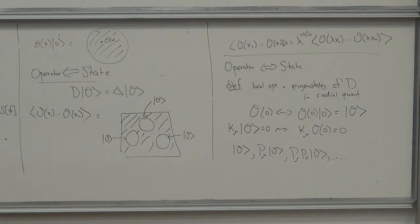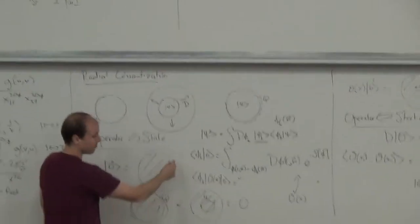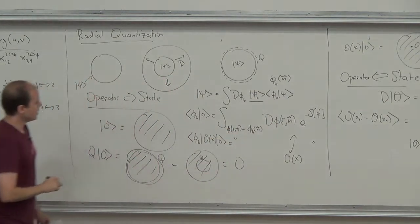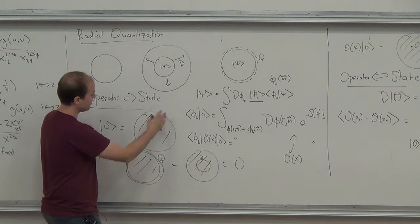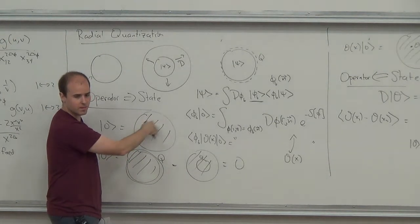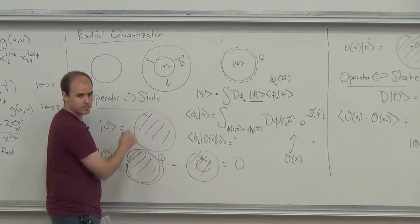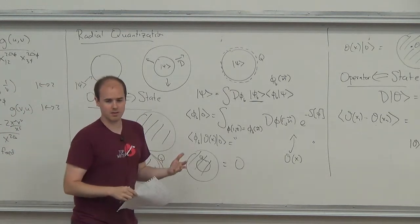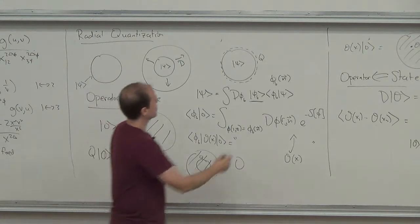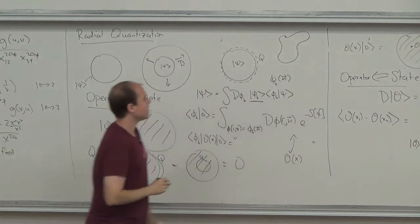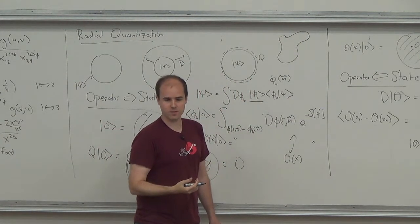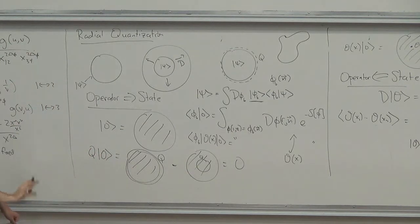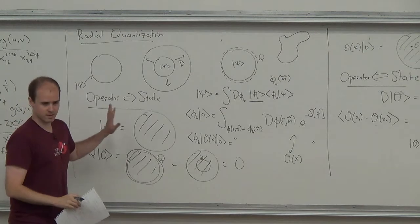Question about notation: when I draw a circle filled in, I mean doing the path integral over the fields in that region — this is different from the pictures for topological surface operators, where a squiggly surface means you integrate the stress tensor over that surface and insert it into the path integral. The notation looks similar but has different meanings.